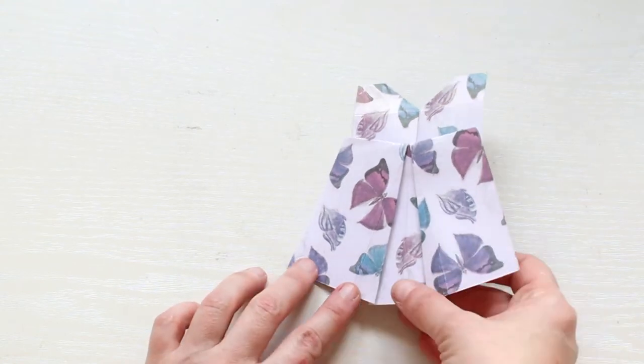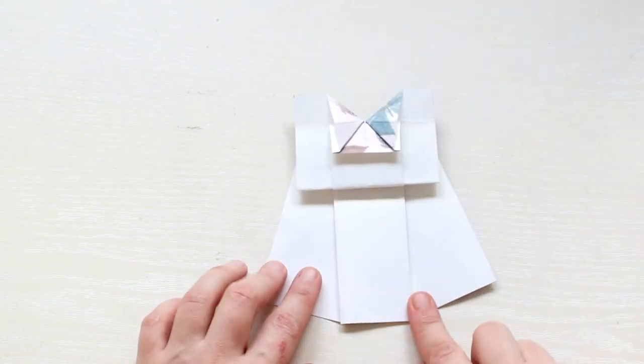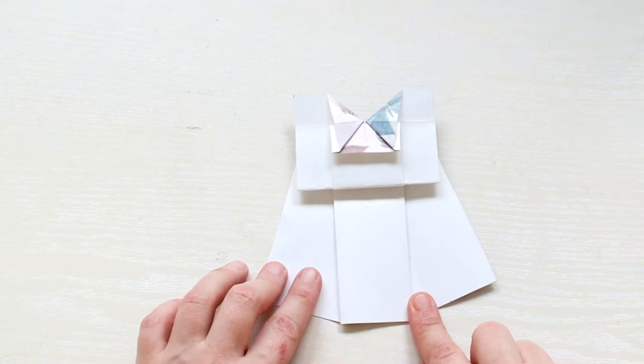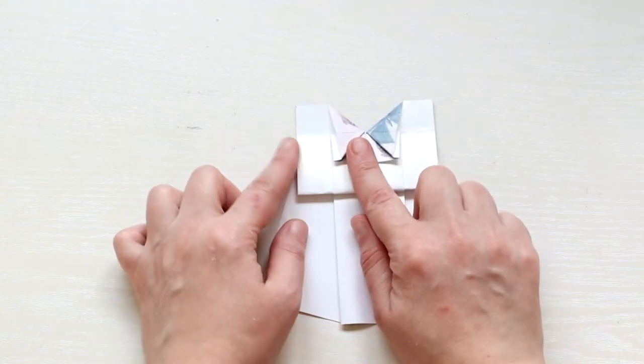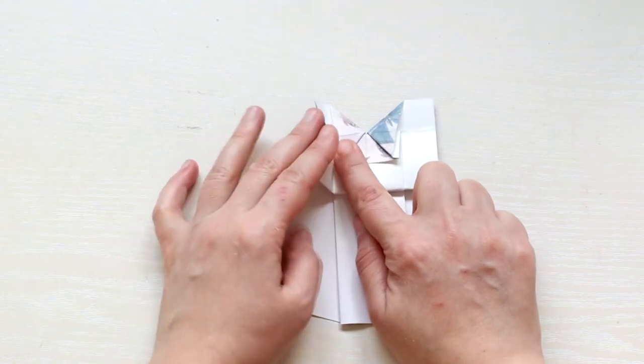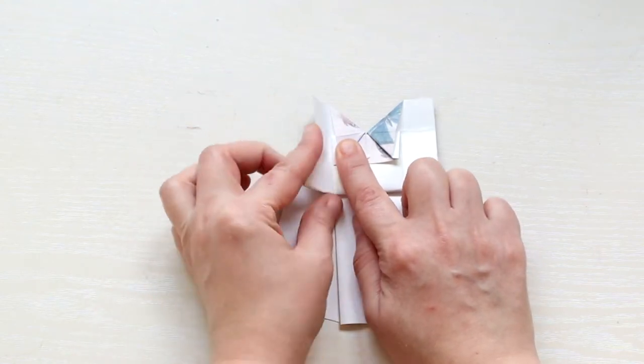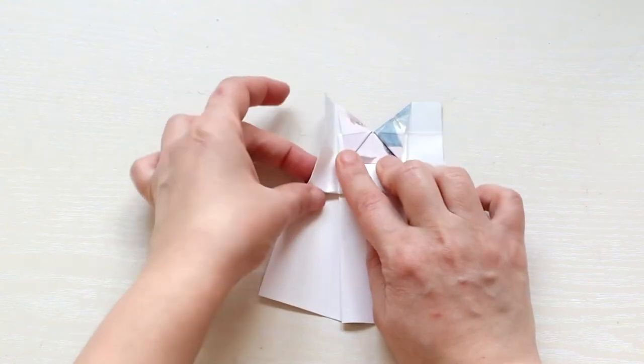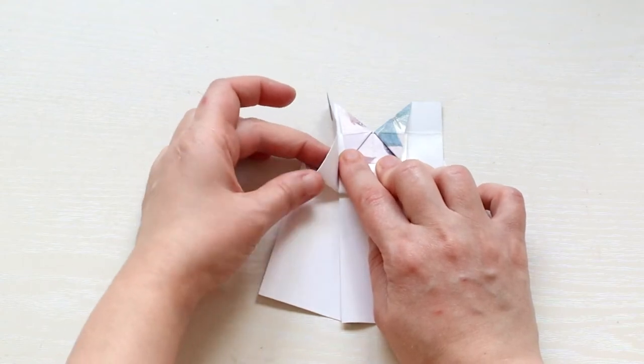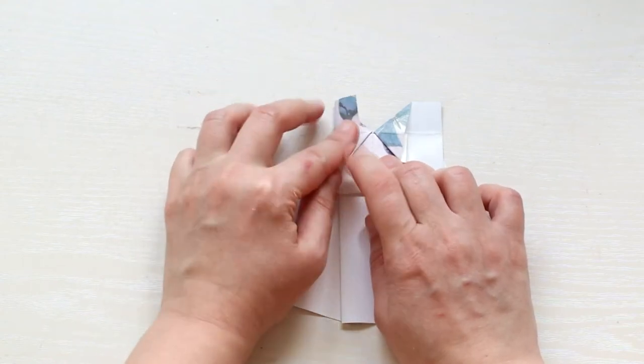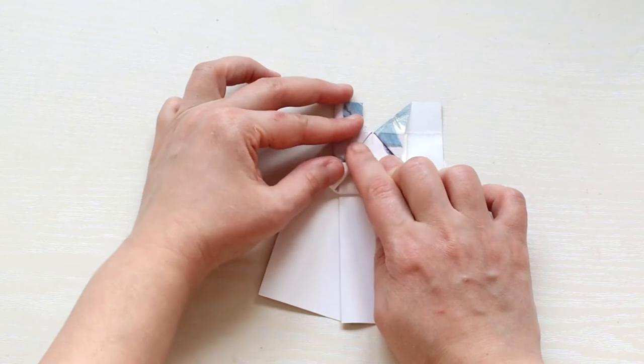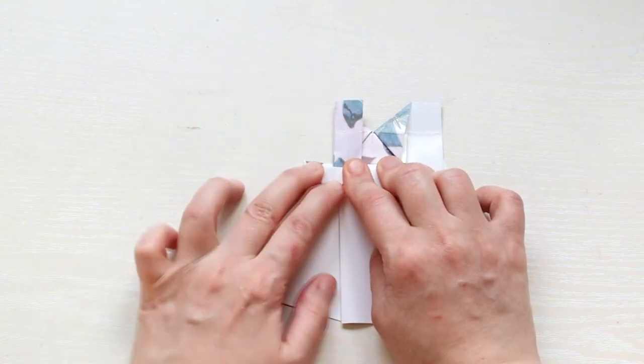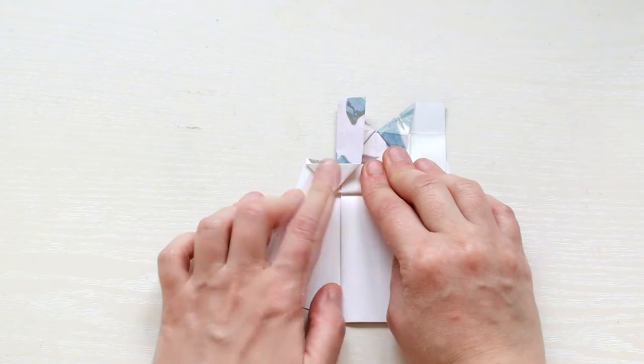Turn again and fold the upper side flaps inwards, pressing down the paper creating a triangular shape at the bottom of the fold.